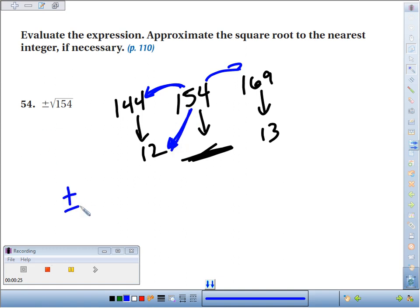So, we've got both positive and negative with that symbol, and we're going to say it's close to 12. Get the approximately symbol in there to say that we estimated it, so we're looking at plus or minus the square root of 154 is about positive or negative 12.